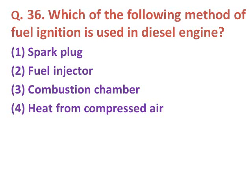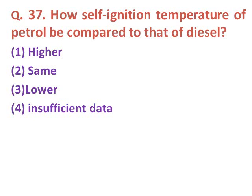Question thirty-six: Which method of fuel ignition is used in a diesel engine? Option one: spark plug. Option two: fuel injector. Option three: combustion chamber. Option four: heat from compressed air. The correct answer is option four — heat from compressed air is used for ignition in a diesel engine.